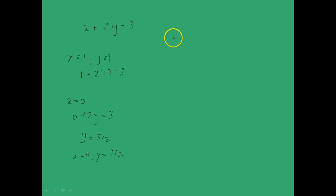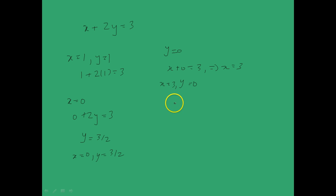Next, if we put y equal to 0, we have x plus 0 is equal to 3, which implies x is equal to 3. So therefore another solution is x equal to 3 and y equal to 0.